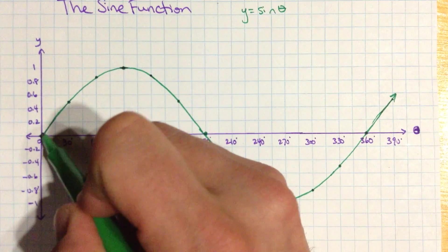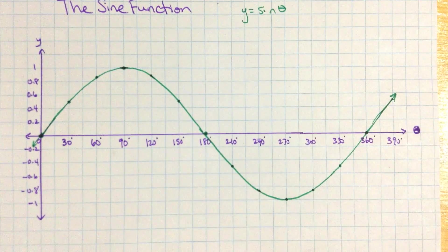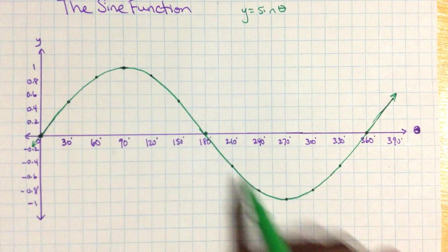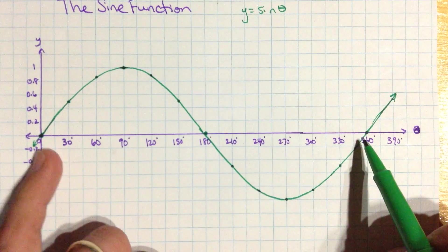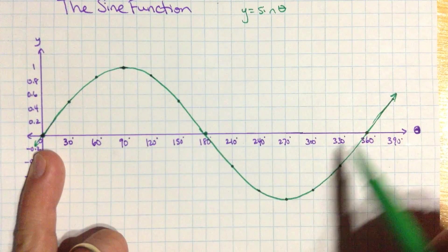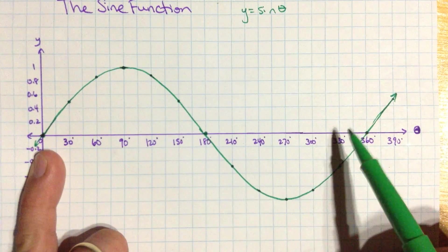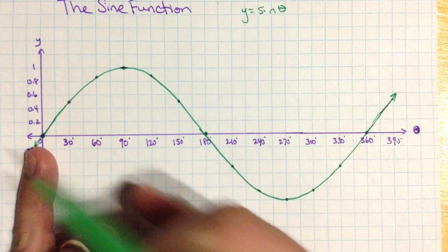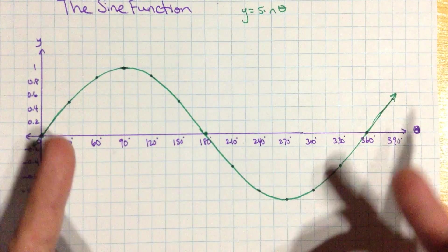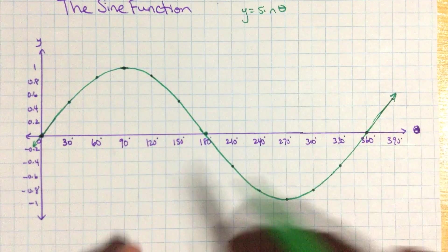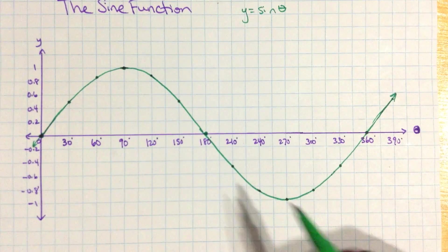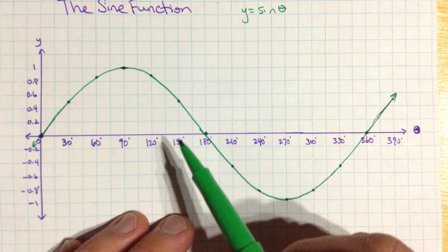And here this continues in this direction. So this, from 0 up to 360, is one cycle. Remember, periodic functions have a cycle. So that's one cycle. The period is 360 degrees. So if you take any interval of 360 degrees, you'll see something that would then repeat over and over on the sine function.